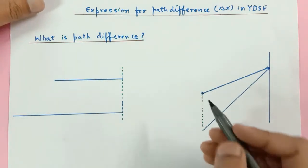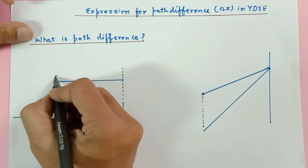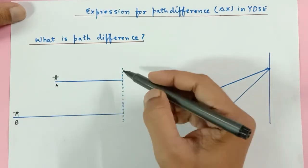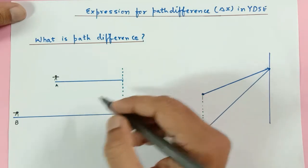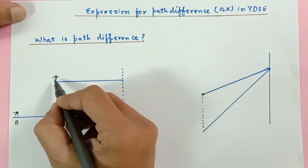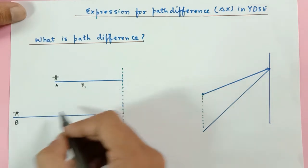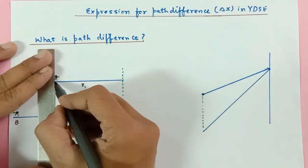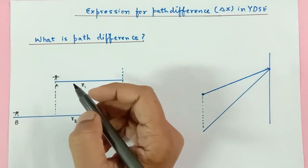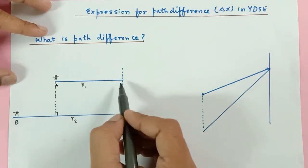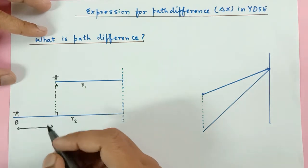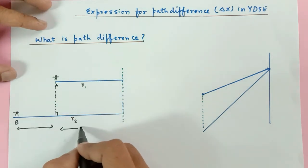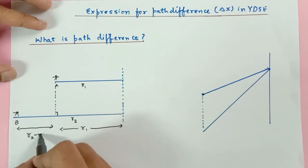Here I have a situation in which there are two friends, A and B. Both are supposed to reach this finish line. This person is going to travel distance r1 and this person is going to travel in a straight line distance r2. A is traveling a shorter distance compared to B, and this part is r1 and this whole part is r2.